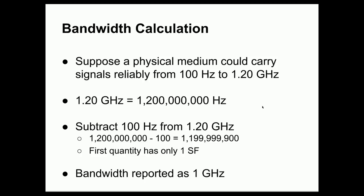In the second example, I have a different physical medium that can carry signals between 100 Hz and 1.2 GHz, 1.20 GHz to be specific. I have three significant figures in this value. So, 1.20 GHz is equal to 1,200,000,000 Hz. If I subtract 100 Hz from the 1.2 GHz value, I get 1,199,999,900 Hz. I can't use this answer, though, as my final answer, because my given quantities, I had three significant figures here, but I only had one significant figure here.